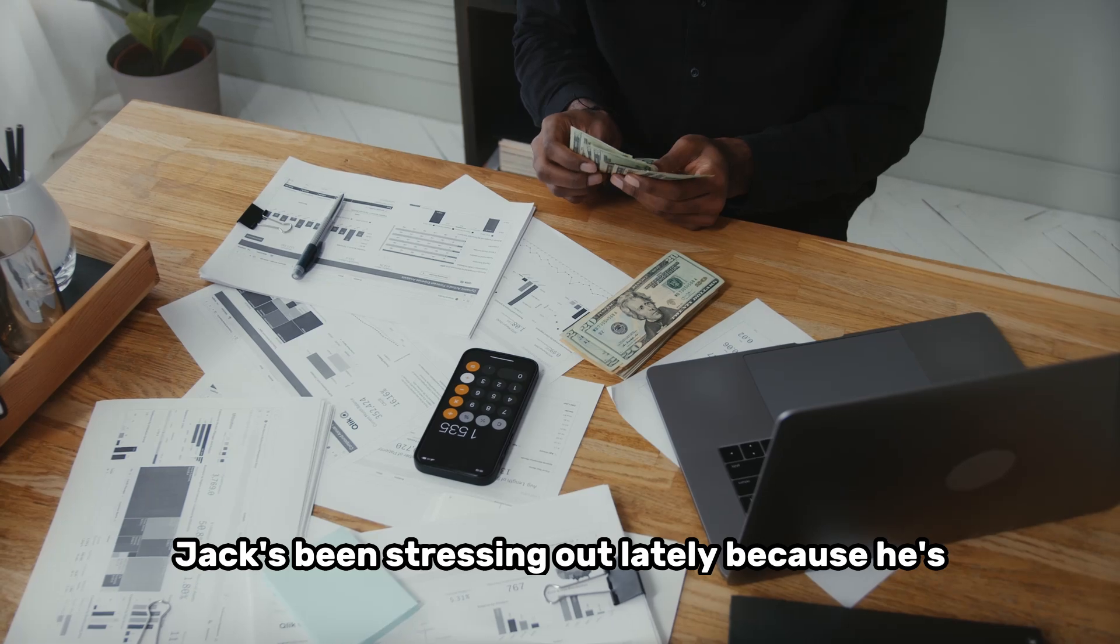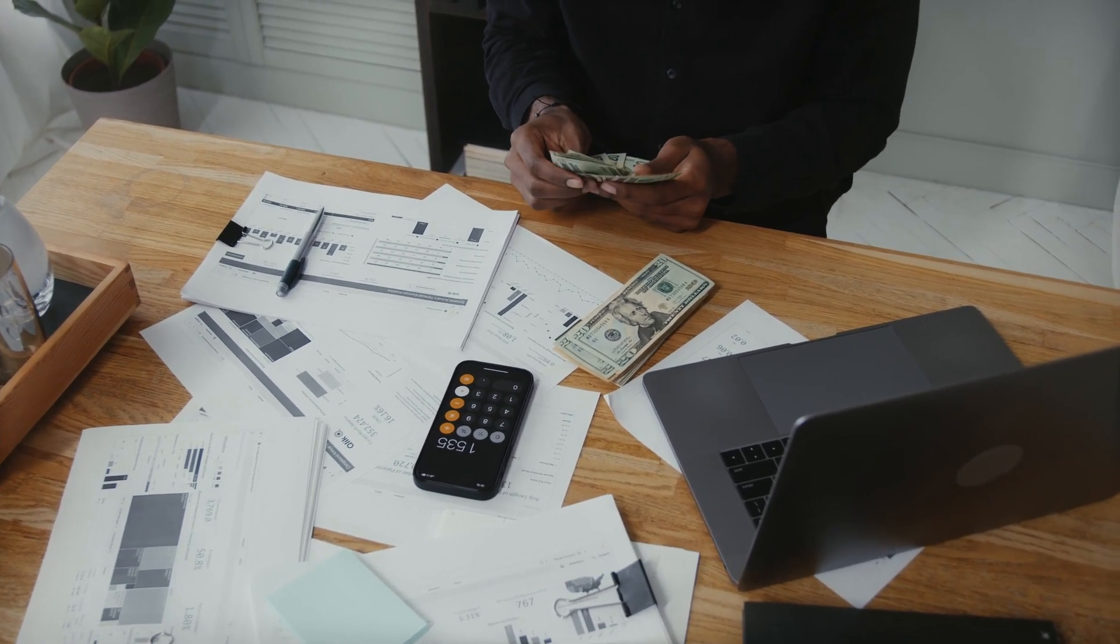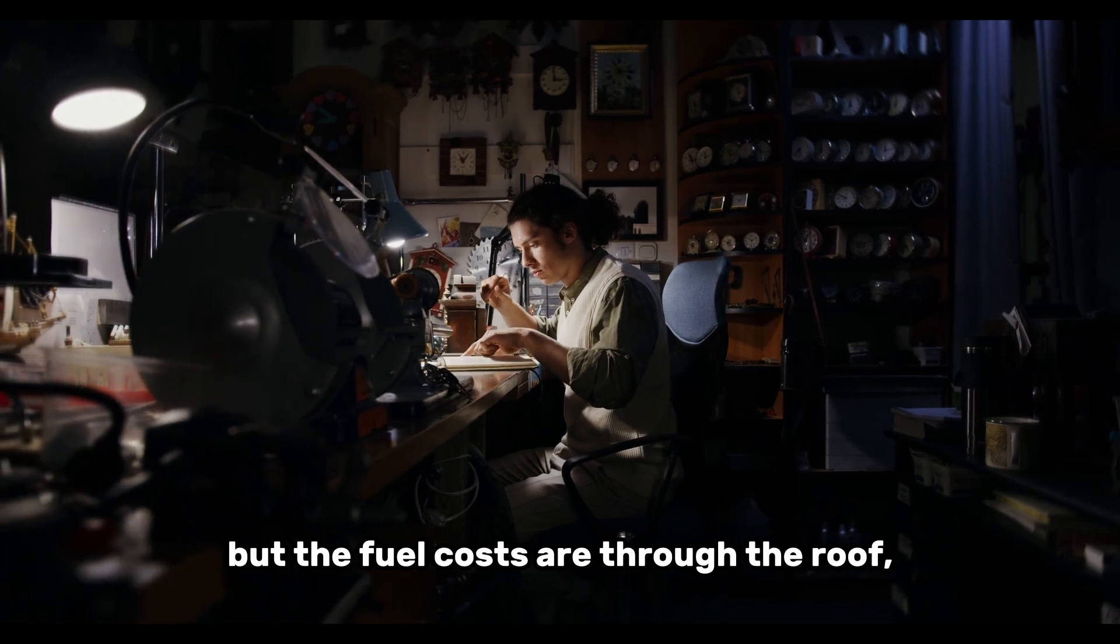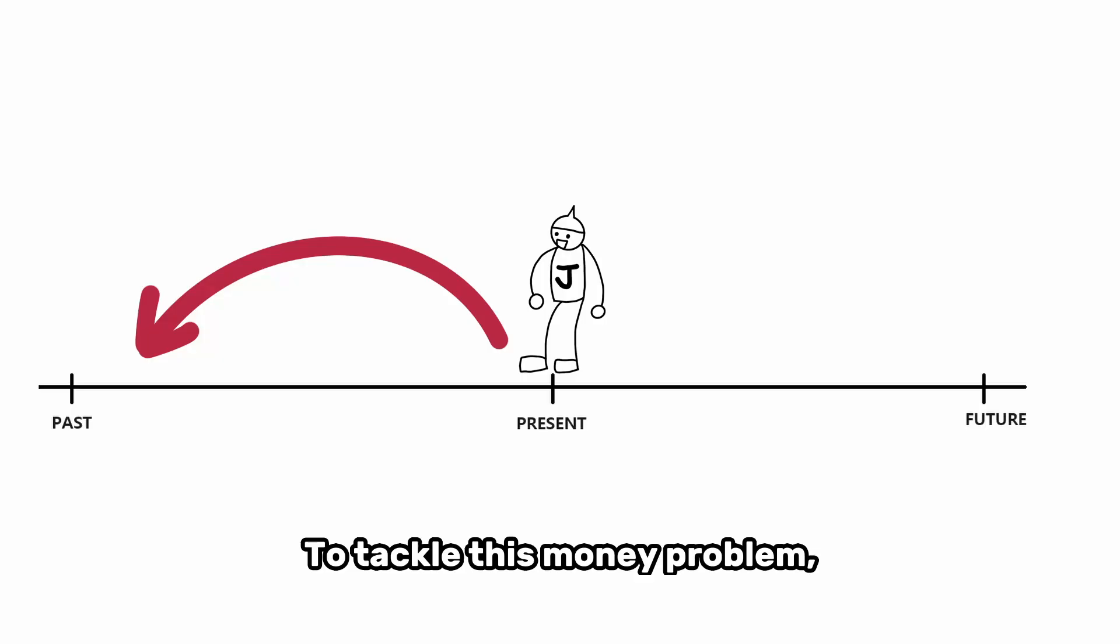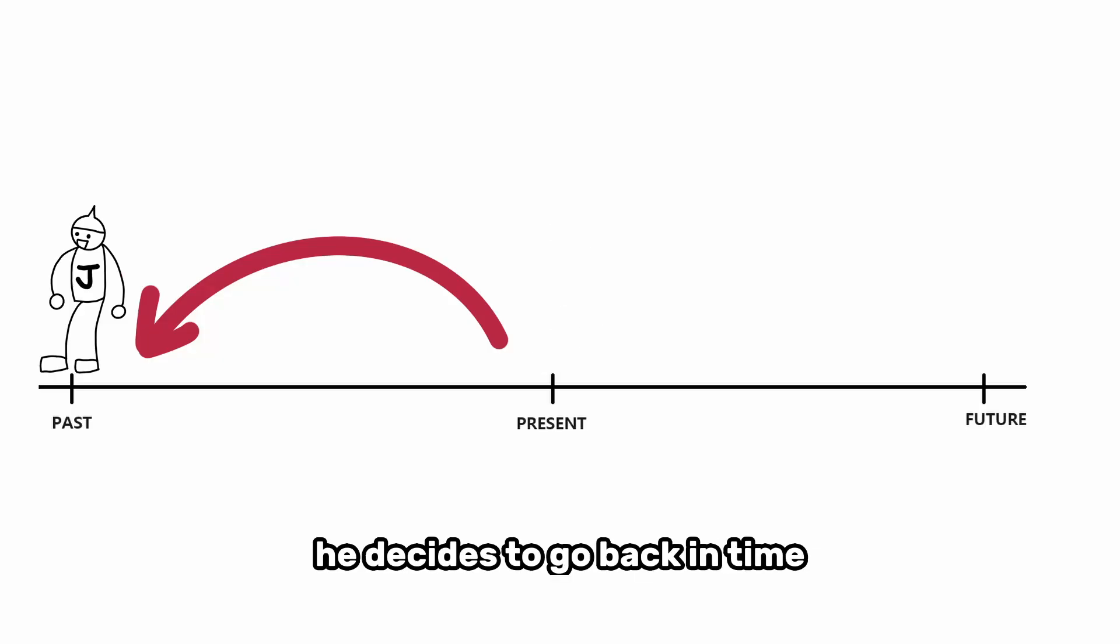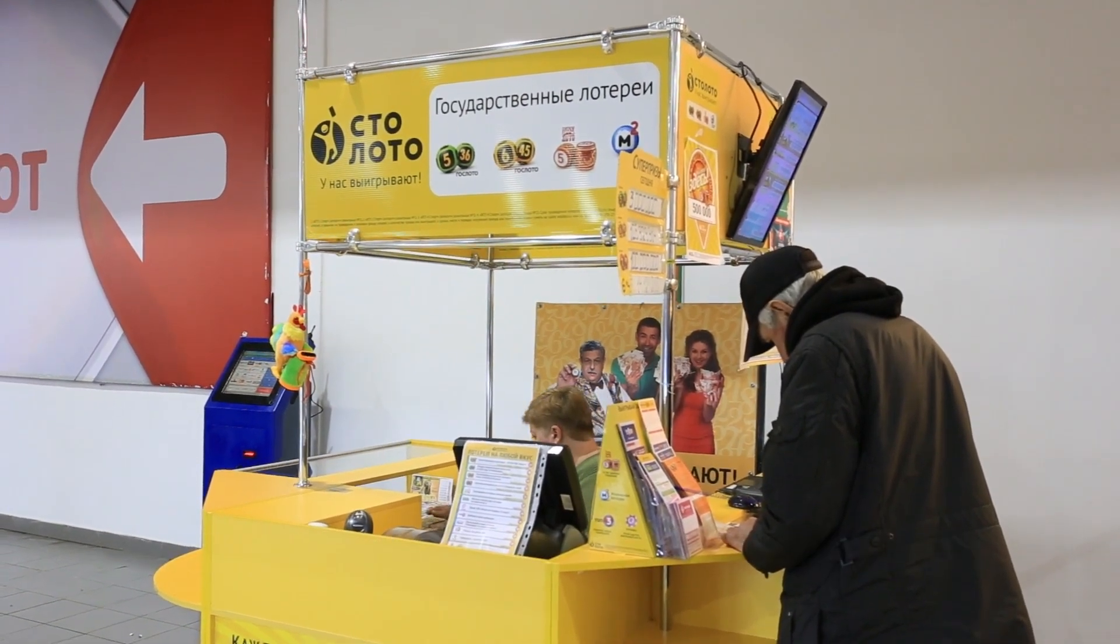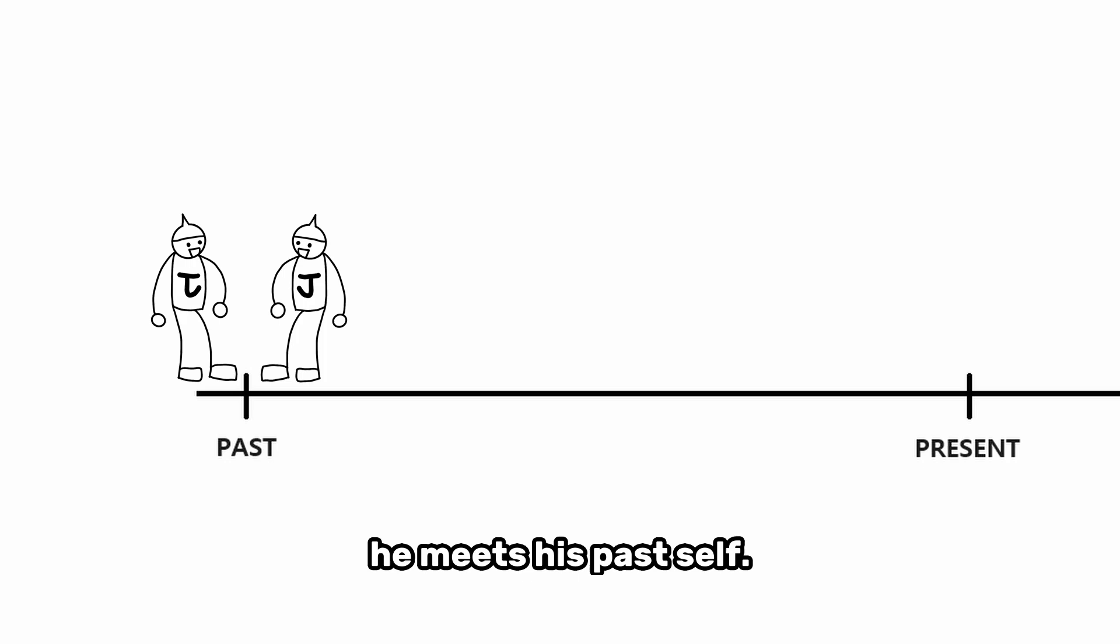Jack's been stressing out lately because he's running low on research funds. I mean, he built a freaking time machine, but the fuel costs are through the roof, you know? To tackle this money problem, he decides to go back in time and invest in stuff like lottery tickets and bitcoin. Off he goes to the past, and bam, he meets his past self.